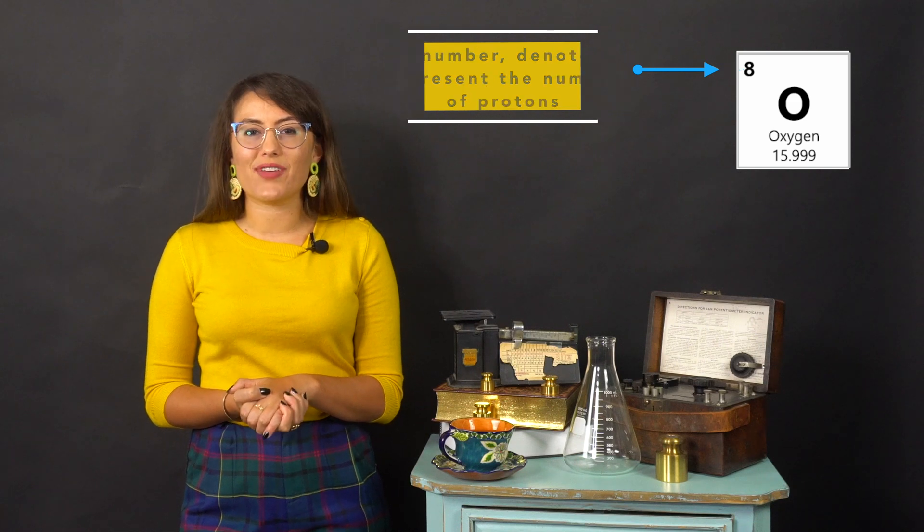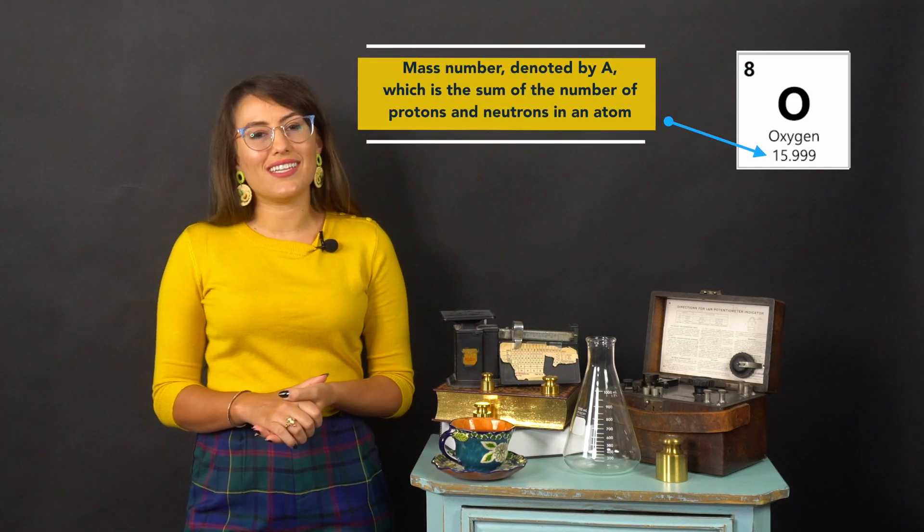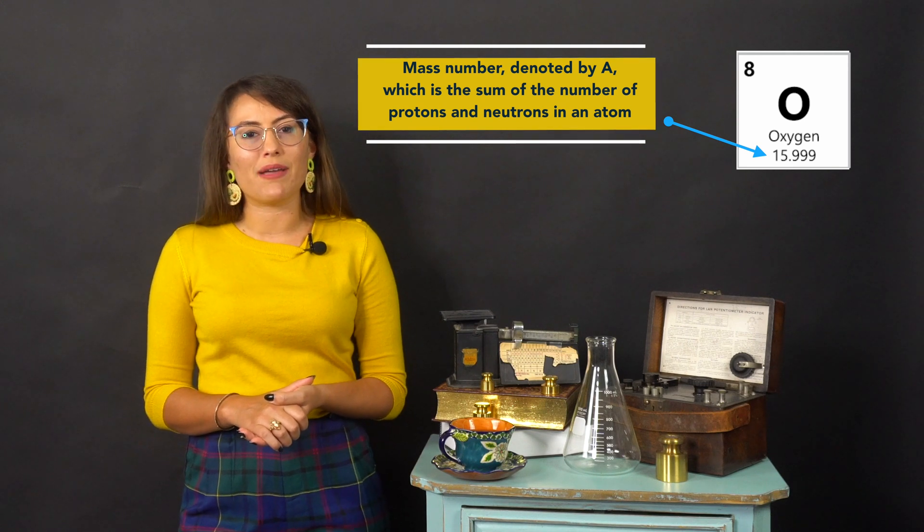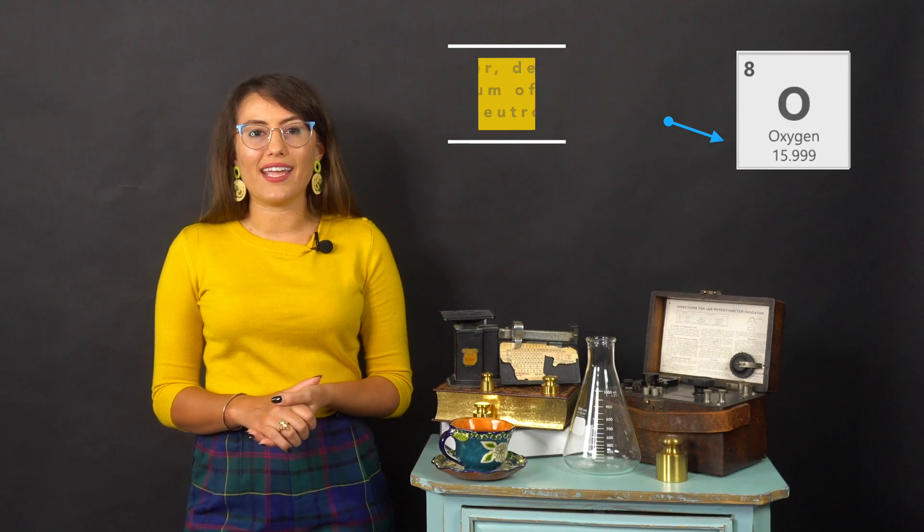Atoms also have a specific mass number, which is the sum of the number of protons and the neutrons in an atom and is given in Atomic Mass Units or AMU, where protons and neutrons each have a mass of 1 AMU.